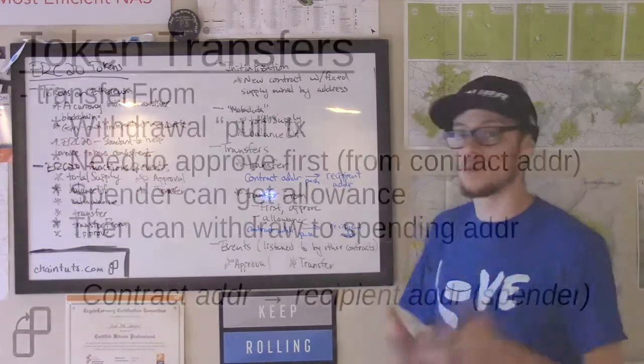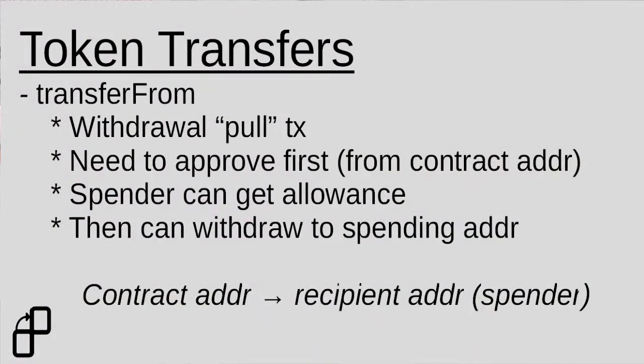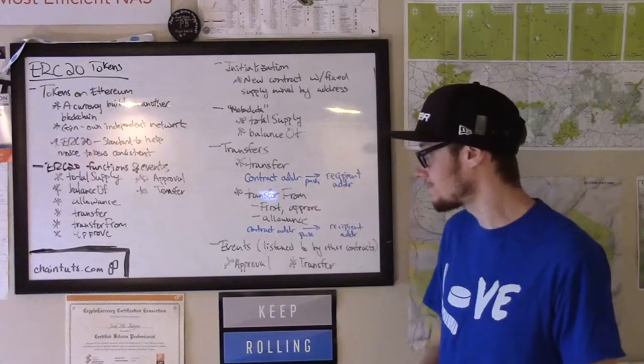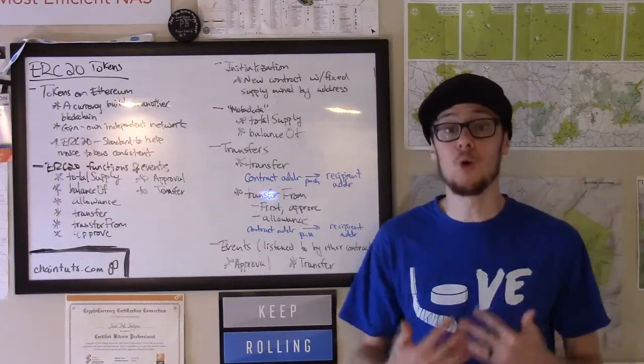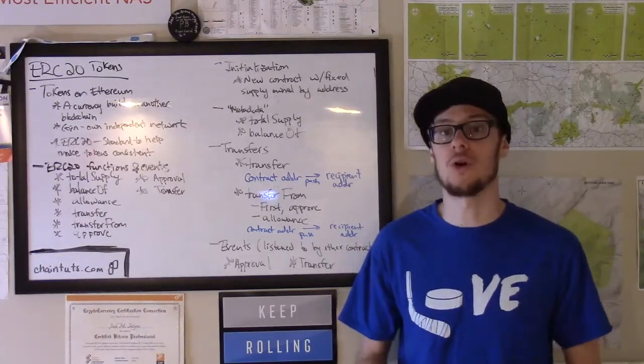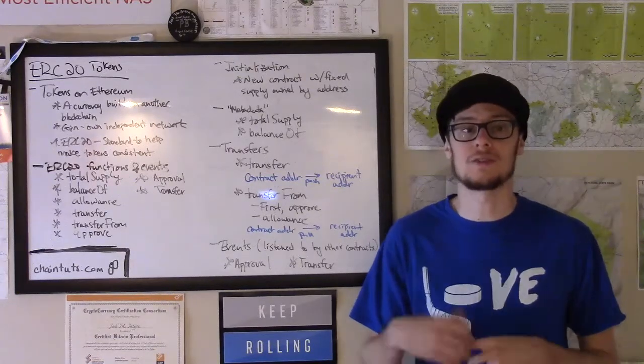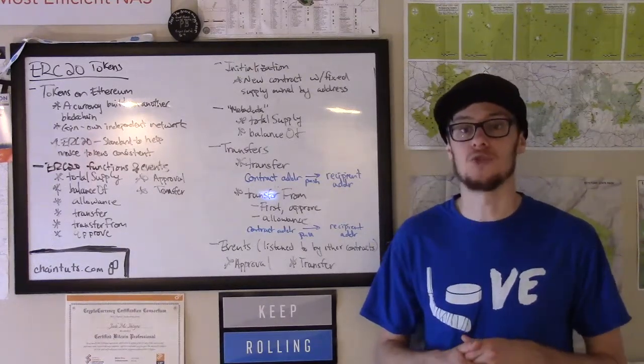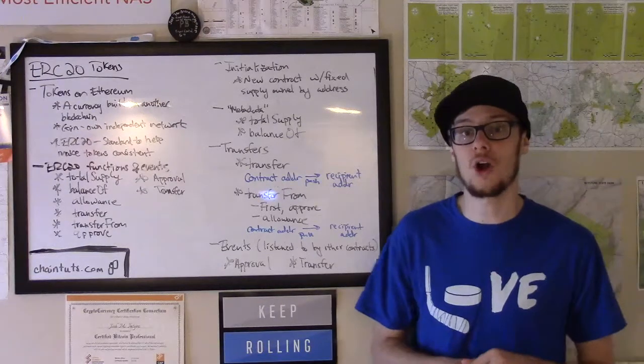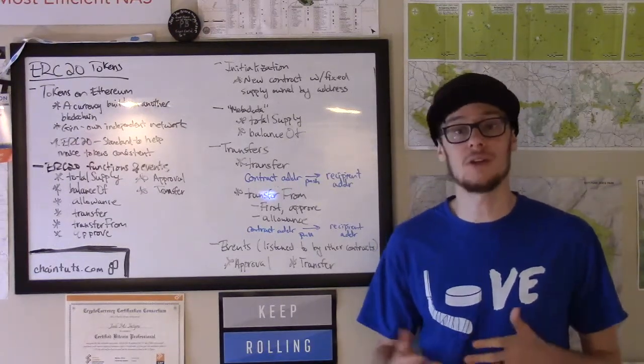So once the approval function is called, the new recipient address, often called the spender, can call the allowance function on the smart contract. This allowance shows how many tokens a certain address is allowed to withdraw from the original contract address. So this behaves more like a pull transaction rather than a traditional cryptocurrency push transaction. It's much like giving somebody permission to withdraw a certain amount from your credit card every month to pay a utility bill, for example.